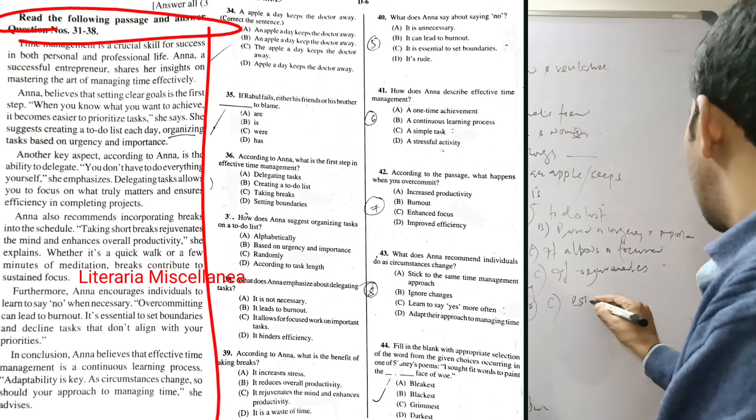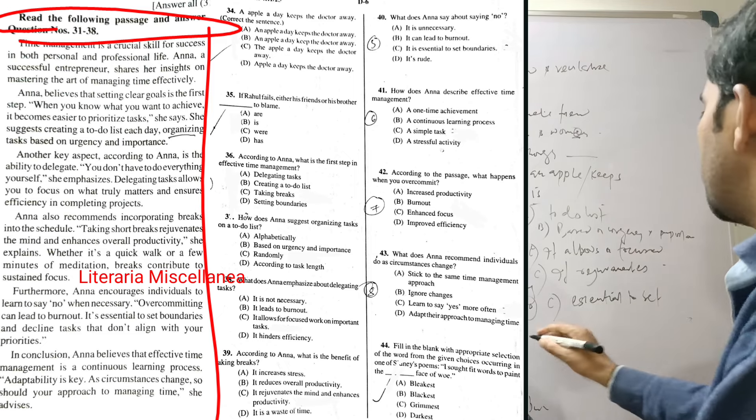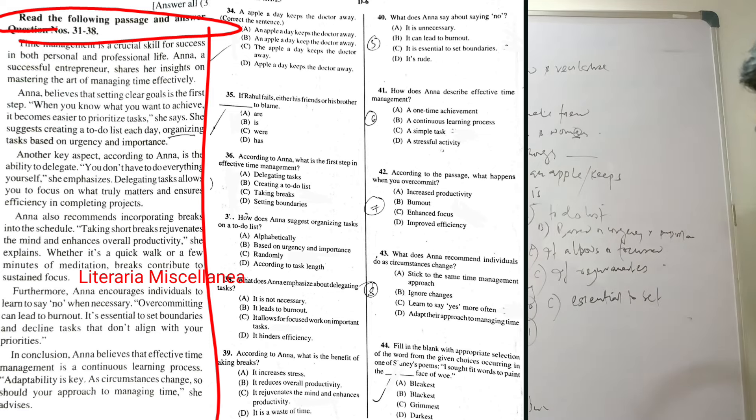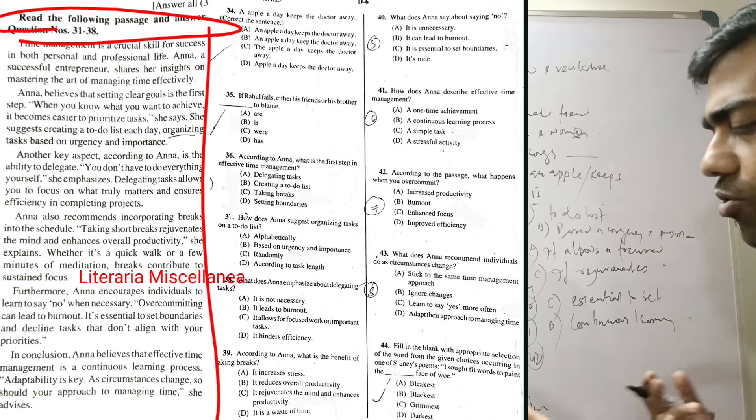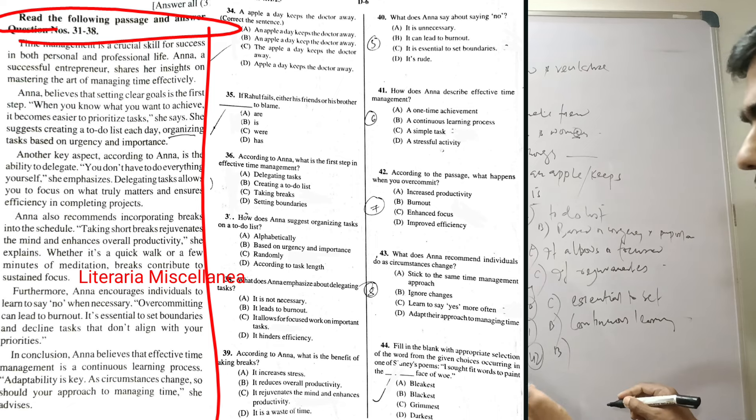Forty: What does Anna say about saying no? It is essential to set boundaries, C. Forty-one: How does Anna describe effective time management? As a continuous learning process, B. Forty-two: According to the passage, what happens when you overcome burnout? B, burnout. Forty-three: What does Anna recommend individuals do as circumstances change? Adapt their approaches to managing time, D.